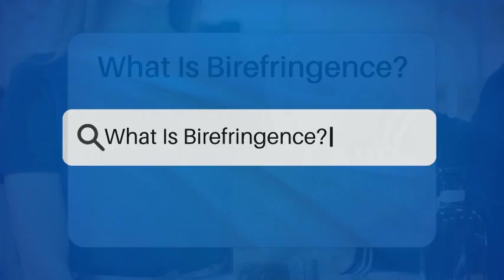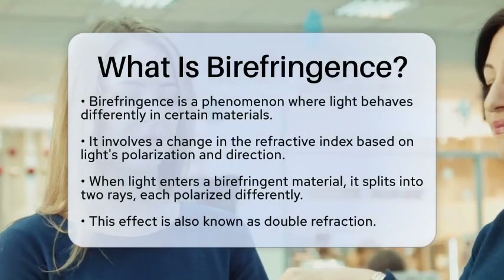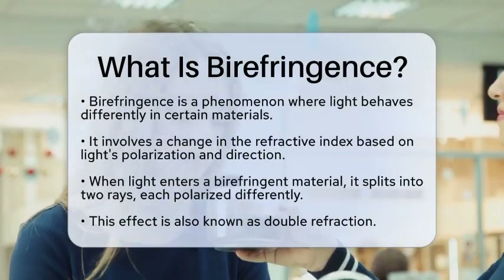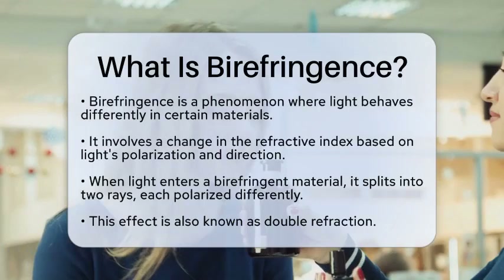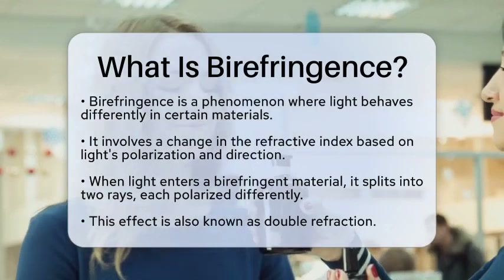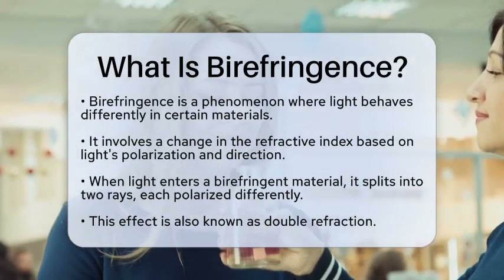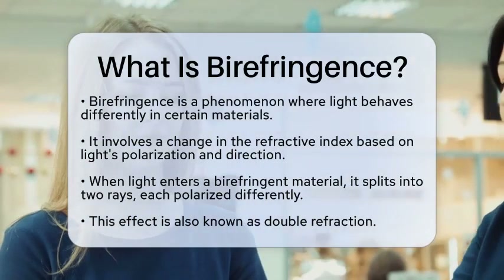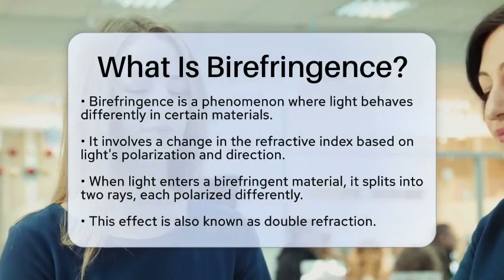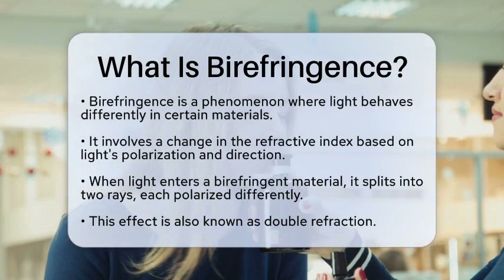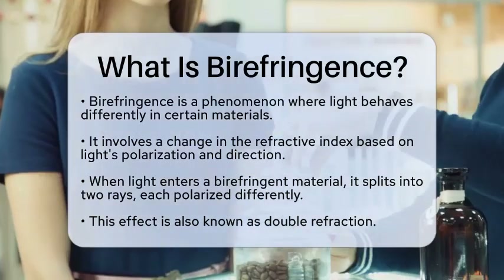What is birefringence? Have you ever wondered how light behaves differently when it passes through certain materials? This fascinating phenomenon is known as birefringence. It is an optical property found in specific materials where the refractive index changes based on the polarization and direction of light. When light enters a birefringent material, it splits into two rays — each ray is polarized differently and travels at varying speeds. This effect is also referred to as double refraction.